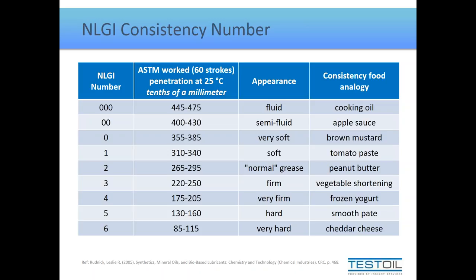Commonly in North America we use NLGI 2s, sometimes NLGI 1s. We tend to go towards the aughts and double or triple aughts for outdoor applications with colder temperatures or centralized grease systems needing good flow characteristics over long runs. Harder greases are used in very limited applications — I've come across them on cables for ski lifts, but other than that you don't see them often.